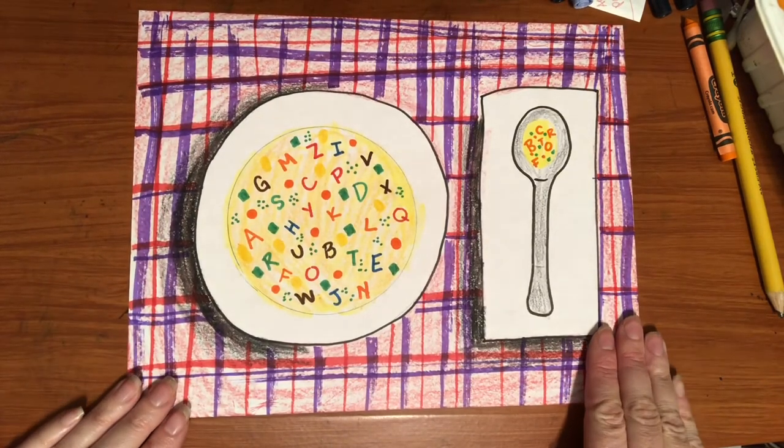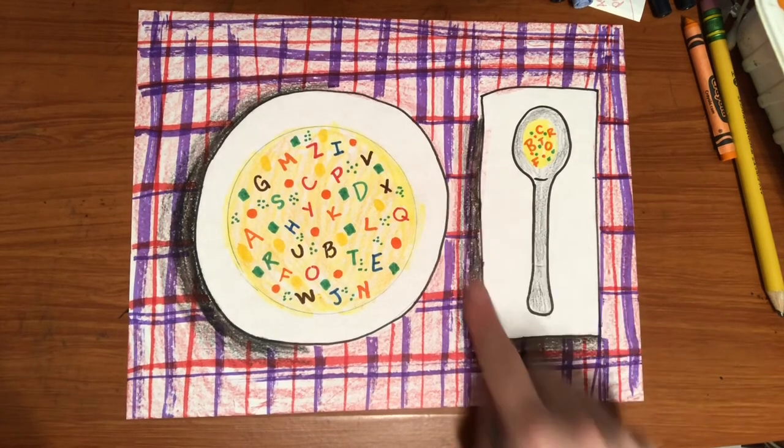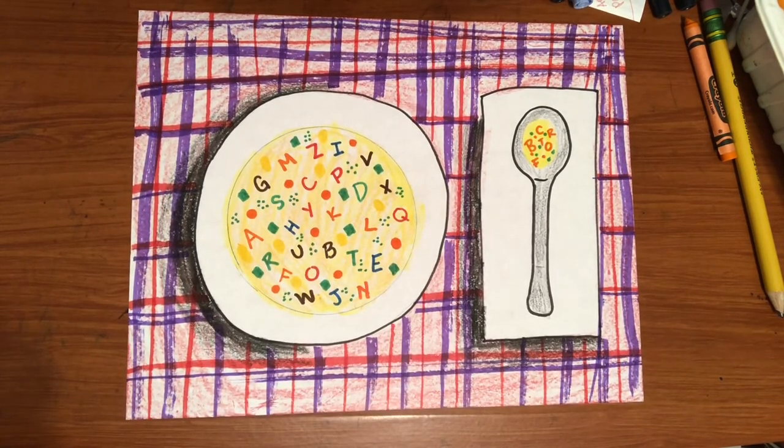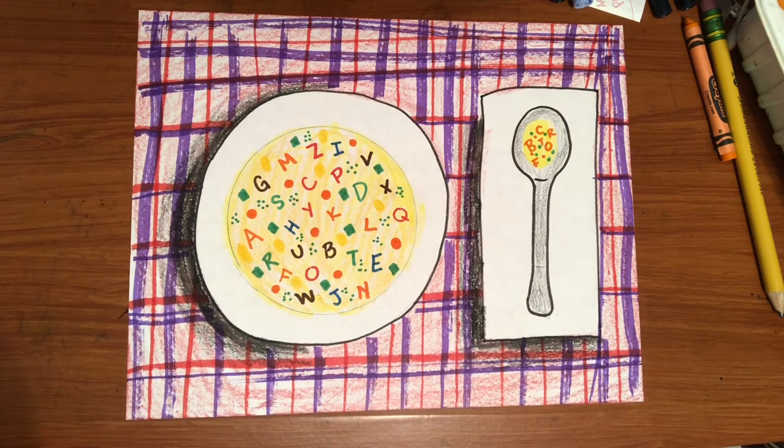And there we have it. Our alphabet soup with our spoon and our shadow. I can't wait to see your alphabet soup and the tablecloth you made and your finished art. Happy creating.